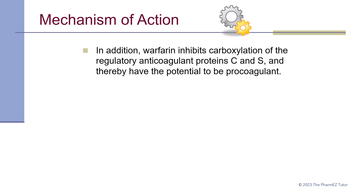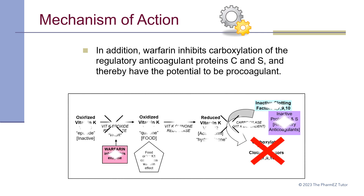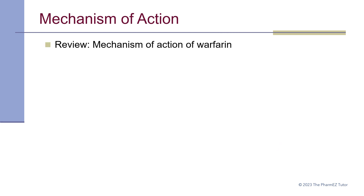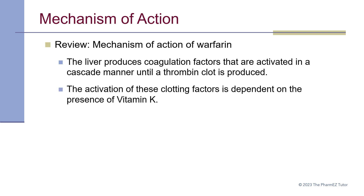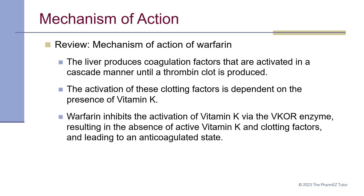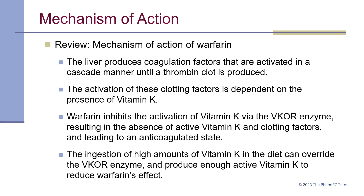In addition, warfarin inhibits carboxylation of the regulatory anticoagulant proteins C and S, and thereby has the potential to be a procoagulant. To review: the liver produces coagulation factors activated in a cascade until a thrombin clot is produced. Warfarin inhibits the activation of vitamin K via the VKOR enzyme, resulting in the absence of active vitamin K and clotting factors, leading to an anticoagulated state. Ingestion of high amounts of dietary vitamin K can override the VKOR enzyme and reduce warfarin's effect.